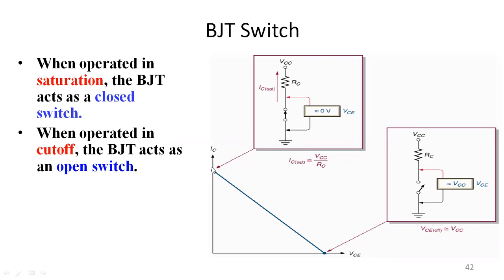In saturation we get the maximum value of current, and in cutoff we have the minimum or zero value of current. So if we operate our switch at the cutoff region and at the saturation region, we are able to operate this transistor in the off state — where we have no current — and the on state — where we have maximum current. We have to operate the transistor within this saturation region and cutoff region so that it is either in the off state or in the on state.